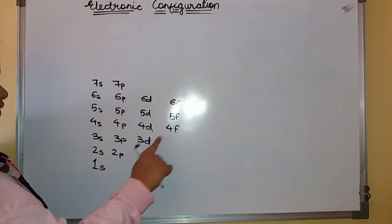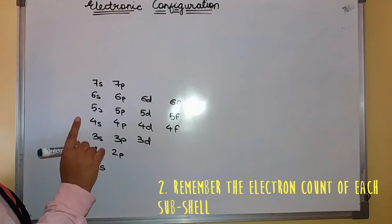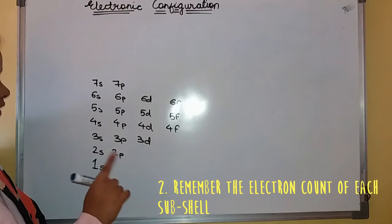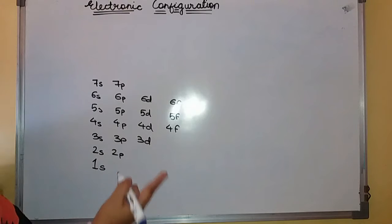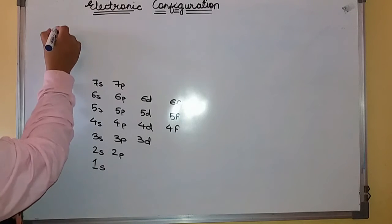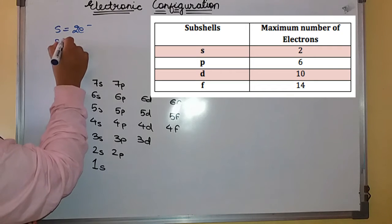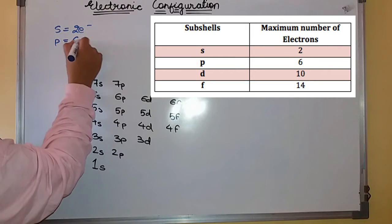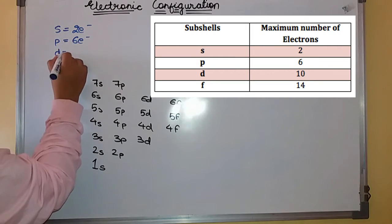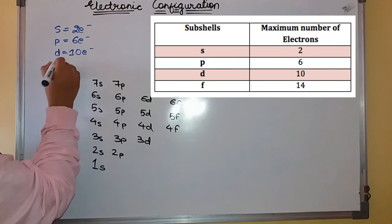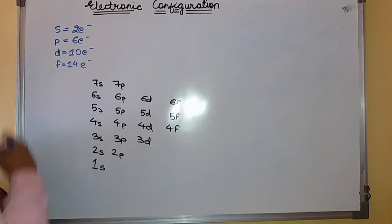Second, there are S, P, D, F subshells mentioned. How many electrons will get incorporated into each subshell? Remember the count. S will contain 2 electrons, P will contain 6 electrons, D will contain 10 electrons, F will contain 14 electrons.